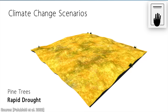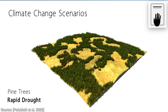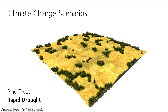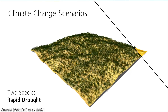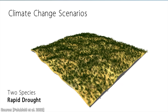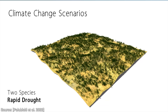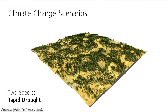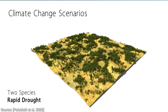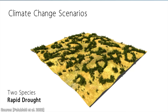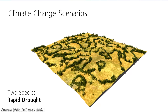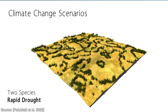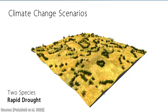Hold on to your papers, fellow scholars, because now we are going to simulate both shrubs and pine trees at the same time. This is a simulation after all — we can do whatever we want here. And look at that! The two species cooperate and compete at the same time, forming these beautiful striped patterns that would not appear otherwise.